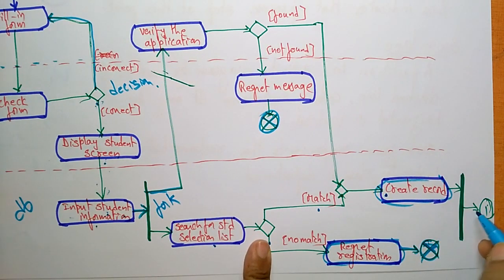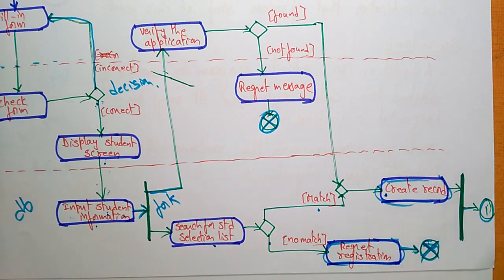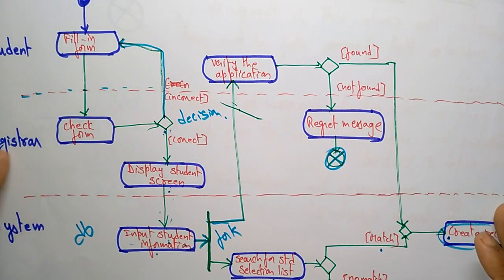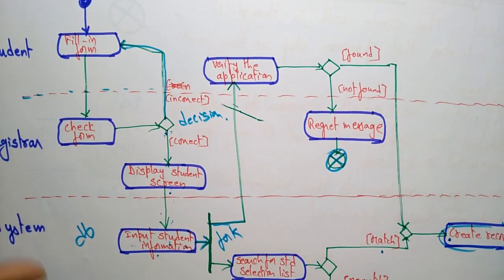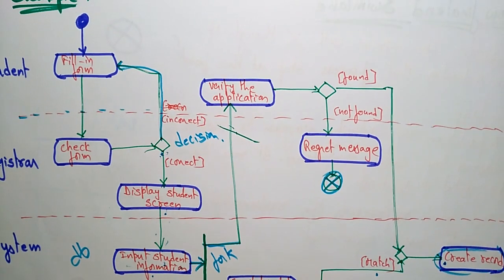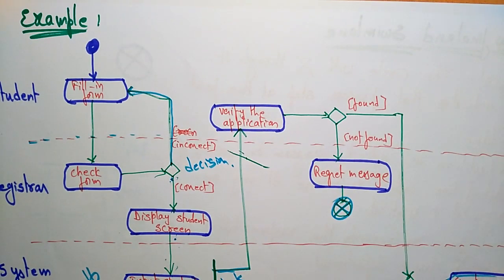Finally, one work is completed — if you want to register a student and create a record, three persons are involved: the student, registrar, and system. With the help of these three actors, we select the student, check the verification details, search for the student in the list, and allocate a record. This is about the activity diagram.